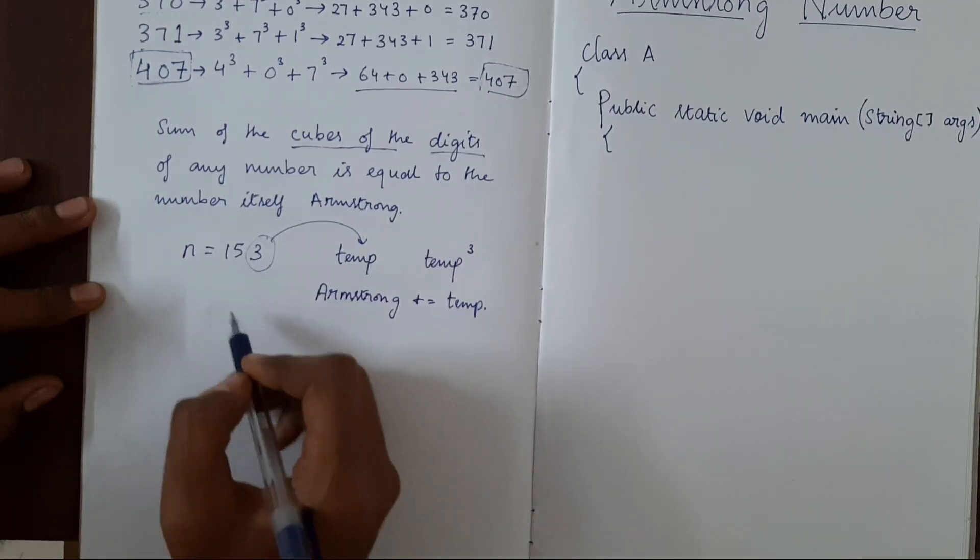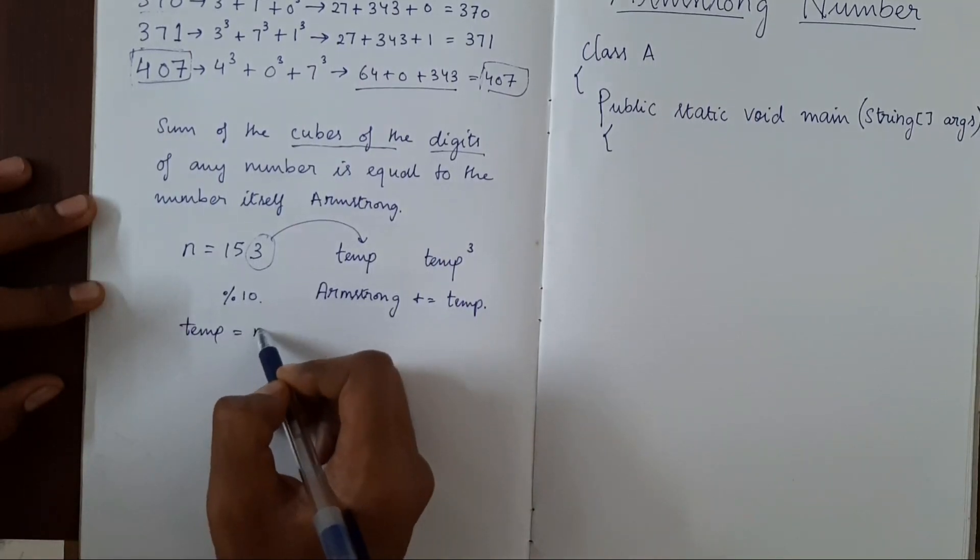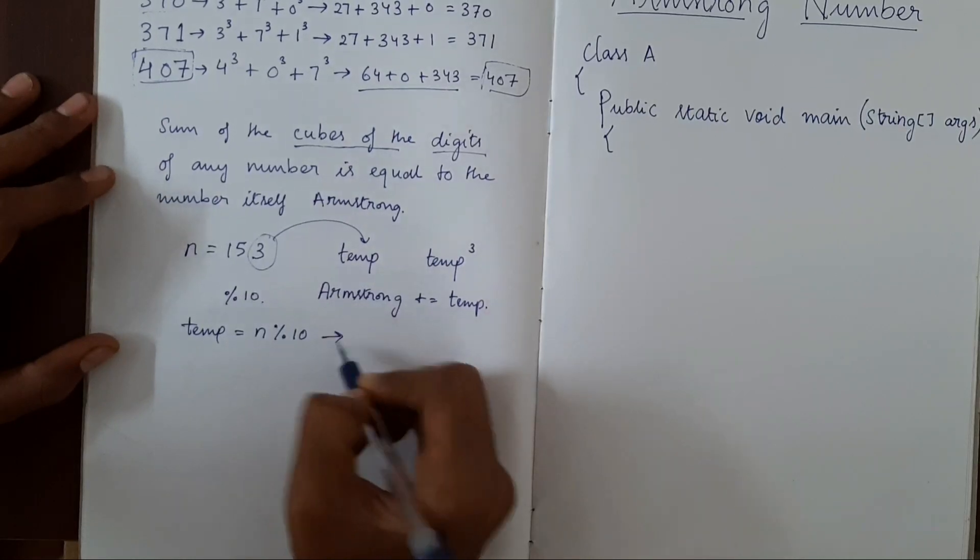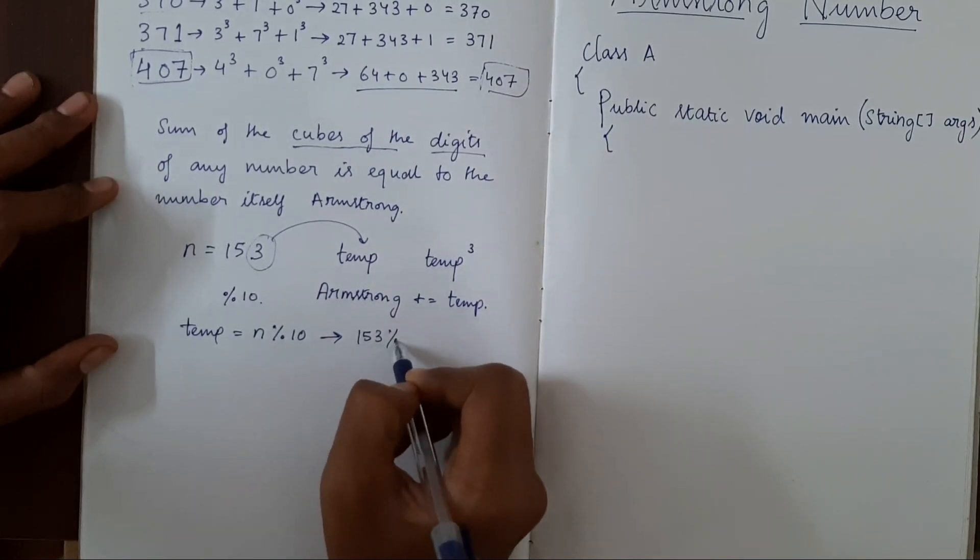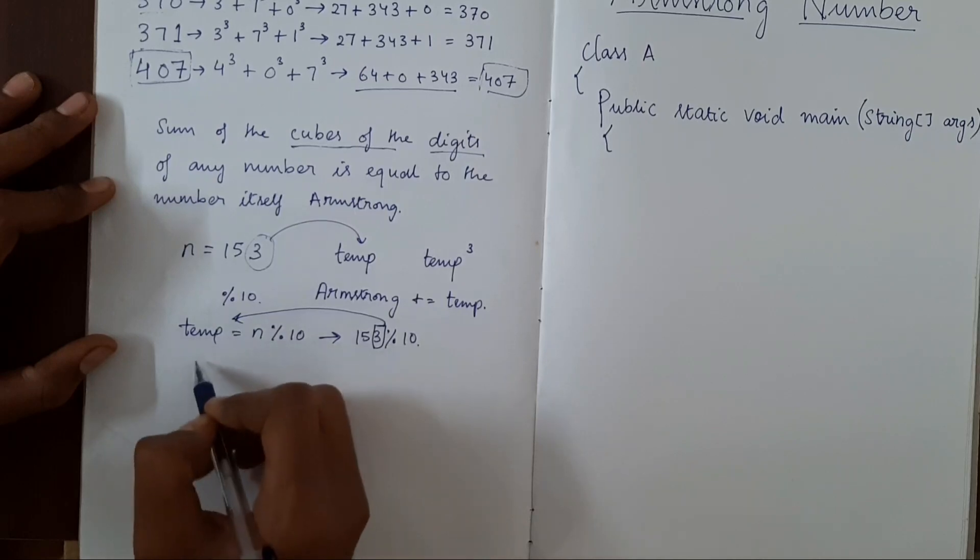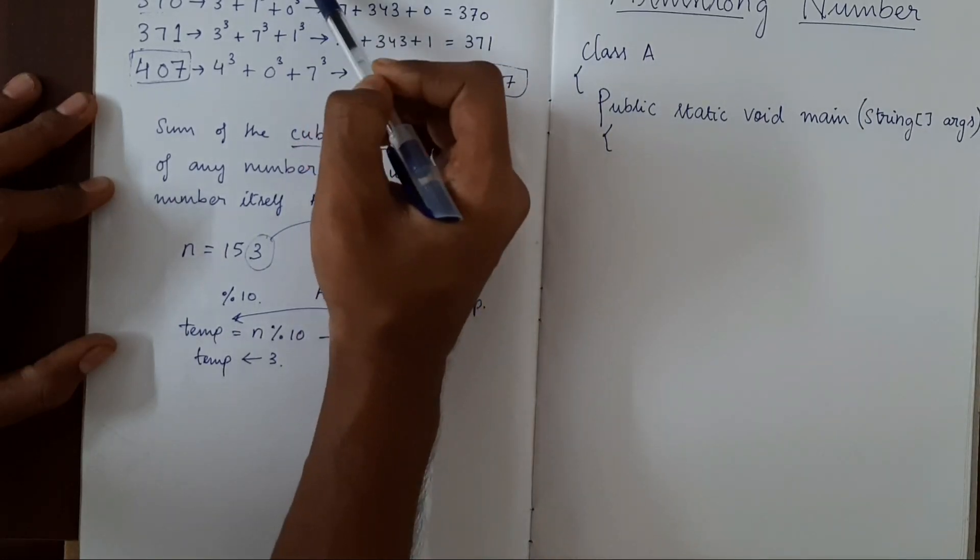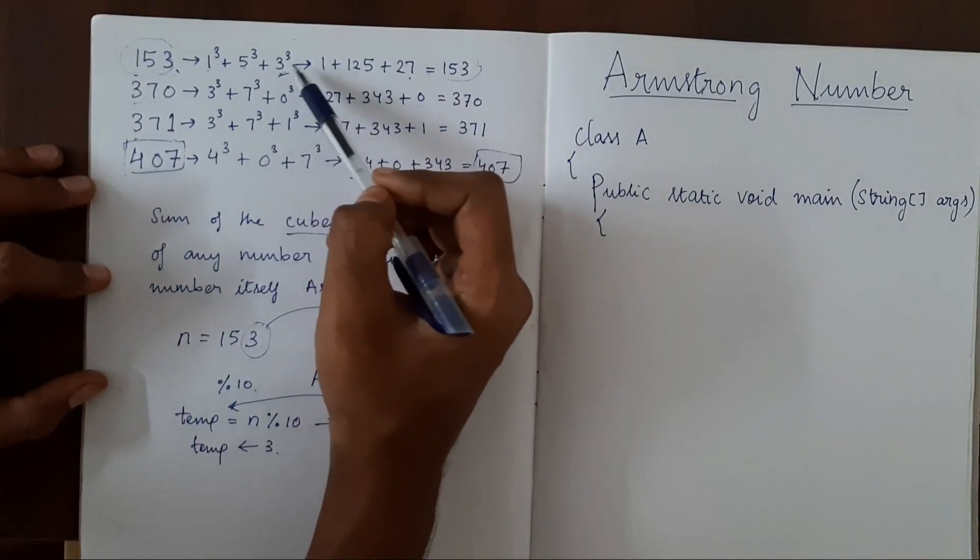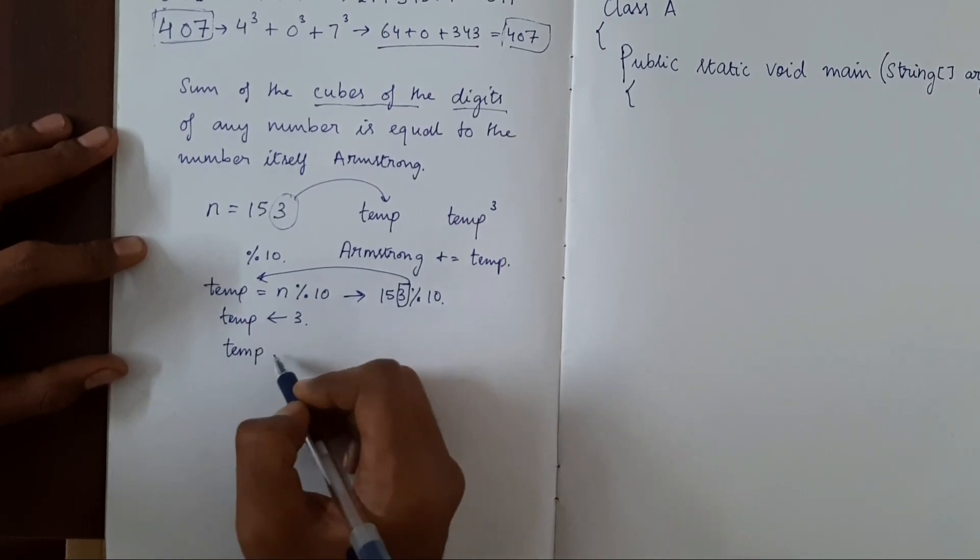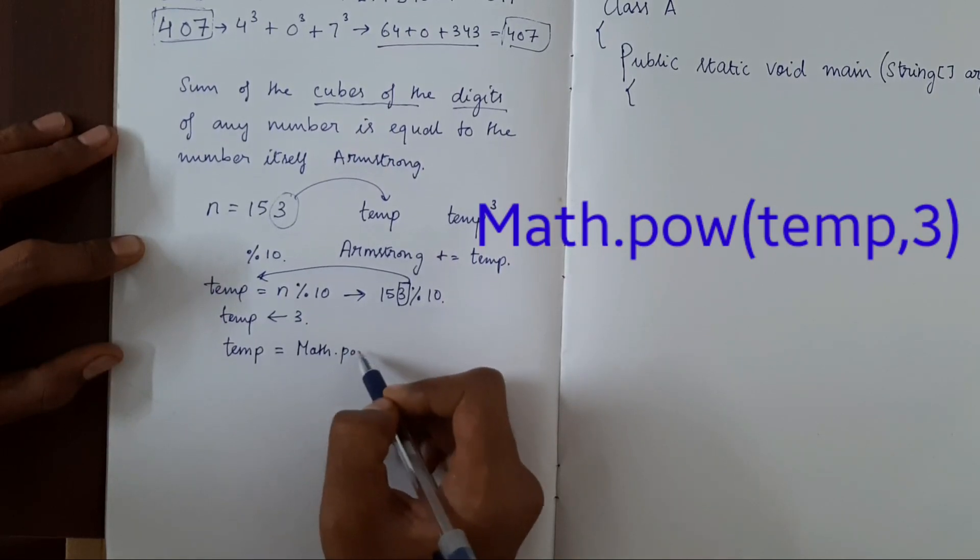In order to take the last digit, we'll use modulus 10. We'll do temp equal to n mod 10. When we do n mod 10, that is 153 mod 10, the remainder 3 will be stored in temp. Now temp has 3. Now we have a digit, now we have to cube it. To cube that, we'll use math dot power function.